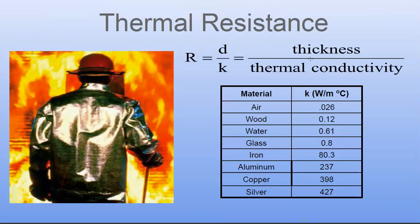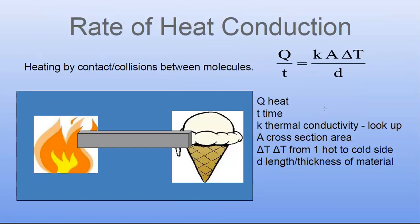Here's a table of representative thermal conductivity K values in watts per meter degree Celsius. Silver is at the top with 427 — very high conductivity. Copper is really good too. Aluminum is not so good — your aluminum pans don't heat very evenly. Your grandmother's copper-bottom Revere Ware is much better. Iron is not so good. Glass is worse. Water, and then air — air is a terrible conductor of heat. We'll talk about that in just a moment.